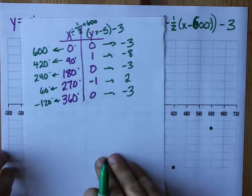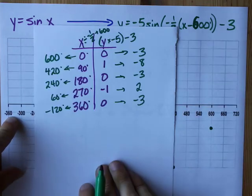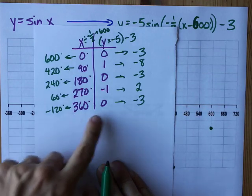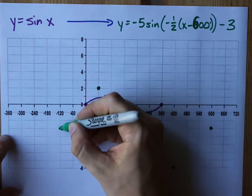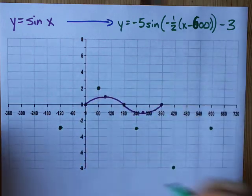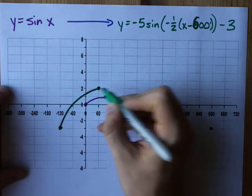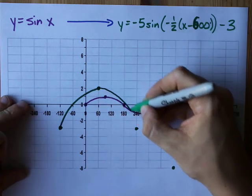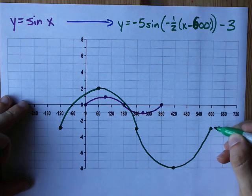60 comma positive 2. 60, positive 2, and negative 120, comma, negative 3. That's negative 120, negative 3. All right, I've got my points. I'm going to connect them from that first middle point to its maximum, back down to its middle, back to its minimum, and back to its middle. There we go.